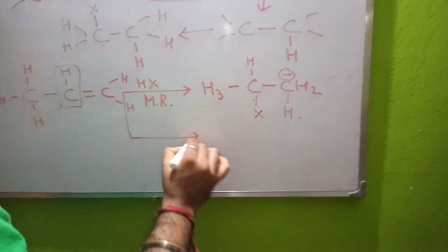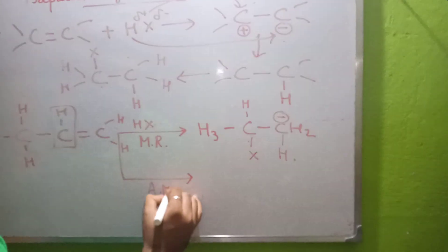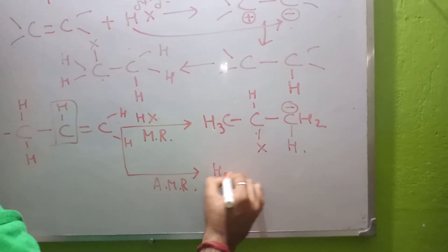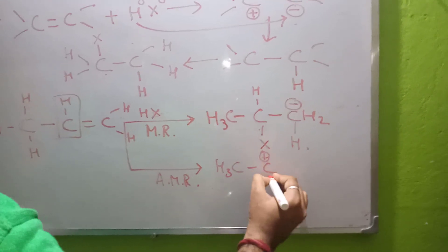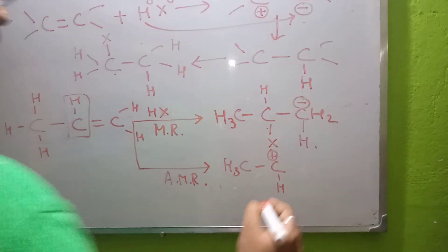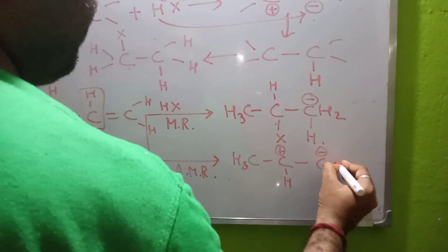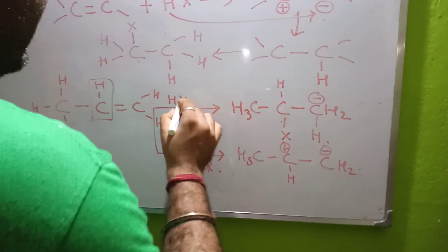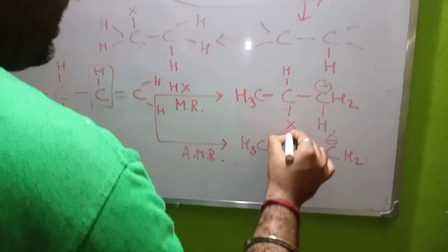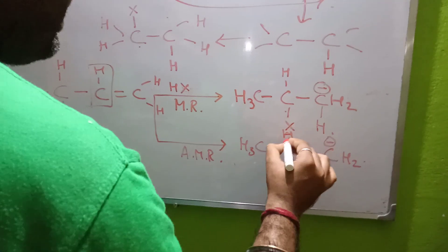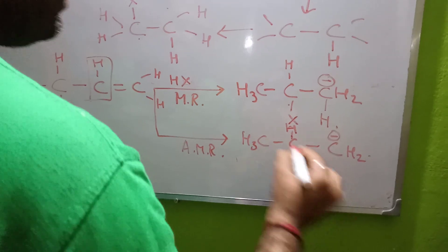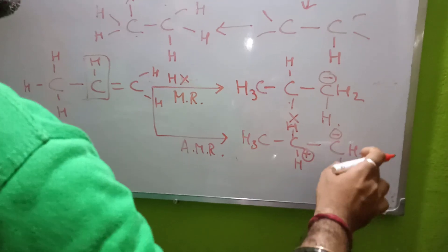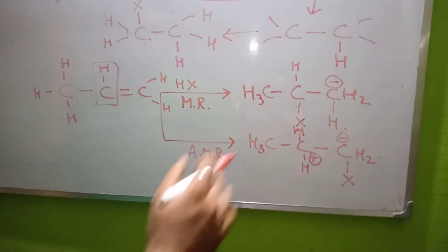Another compound can also form by the help of anti-Markovnikov's rule. The carbon which had a plus charge due to deficiency of hydrogen, and the one with a negative charge due to more hydrogen atoms — just the opposite thing happens. The hydrogen comes over and gets attached to the carbon with a plus charge, and the halogen atom goes to the carbon with a negative charge, that is the one with a greater number of hydrogen atoms.